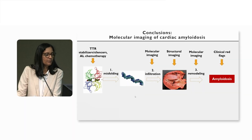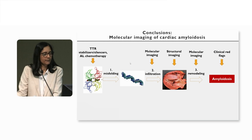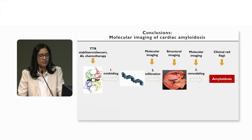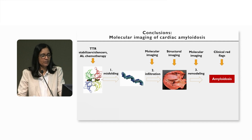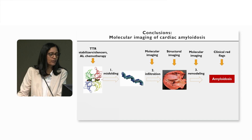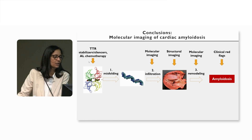This brings us back to what I started the talk with: how we diagnose or suspect amyloid based on clinical red flags, use structural imaging to see if there are any changes, then further study with molecular imaging to identify infiltration, and then treat the patients.